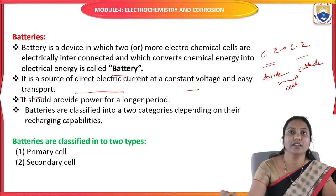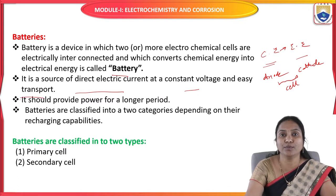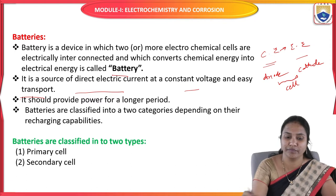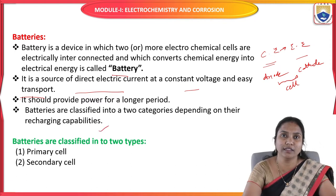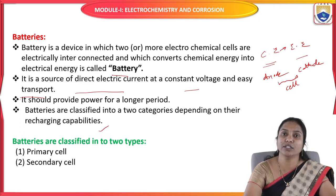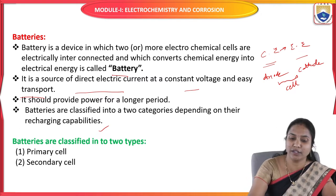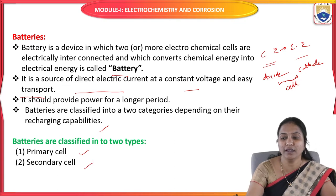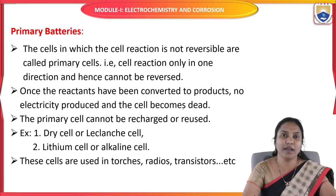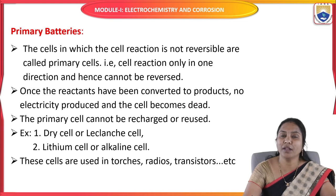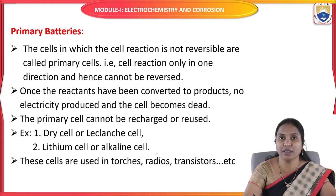Batteries should provide power for a long period. These batteries are classified into two categories depending on their rechargeable capabilities: primary batteries and secondary batteries. Primary batteries are those in which the cell reactions are not reversible.